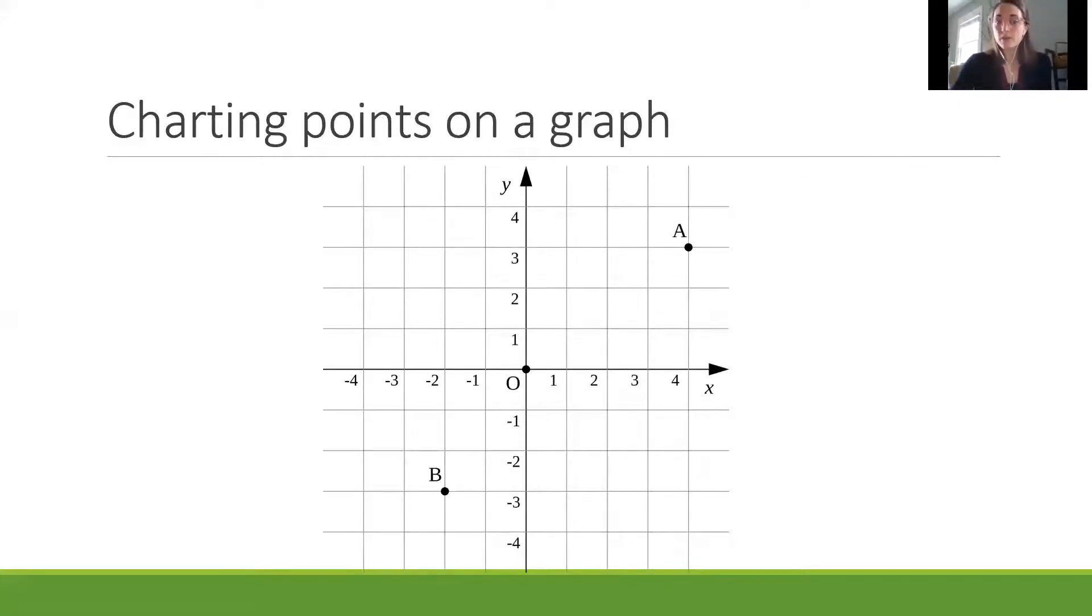Start at the zero. We're trying to find point A, so we would go over on the x-axis until we line up with A. You should be at positive four because it's right underneath where that A point is on the x-axis. So our x-coordinate is four. Now follow that four line up to where the A is. Where is it on that y-axis? How many lines up did we go? We went up to three. So our coordinate is four, three.